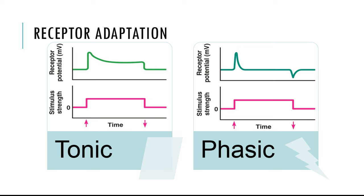What's interesting about receptor adaptation is that as long as the stimulus is present, the receptor adapts. But when the stimulus is gone, the receptor has an off response. When the birds stop chirping, you suddenly notice — it's quiet. Or if you take your cap off, you still acknowledge that you're taking it off. So there's a distinct off response when the stimulus is removed.